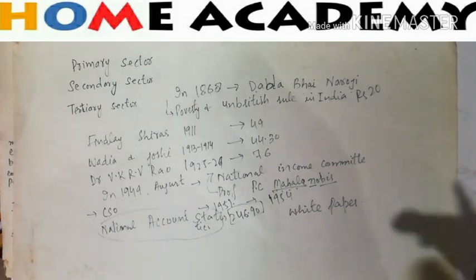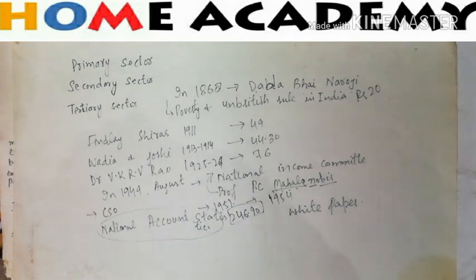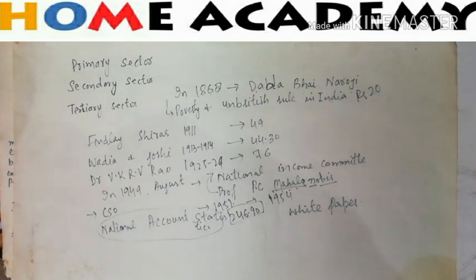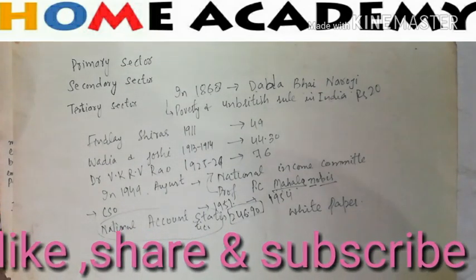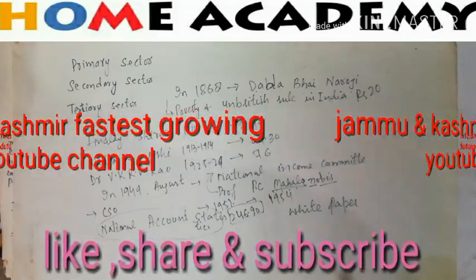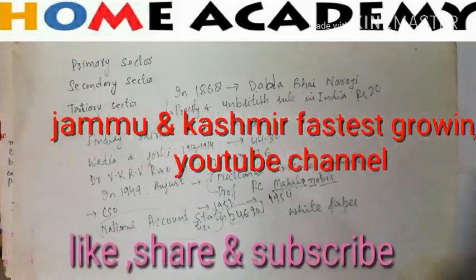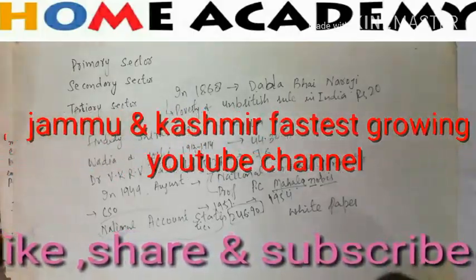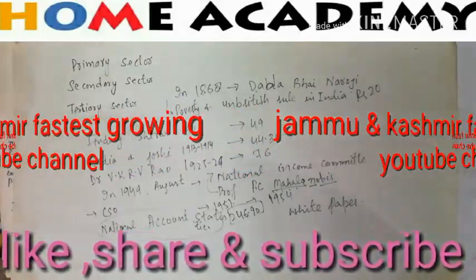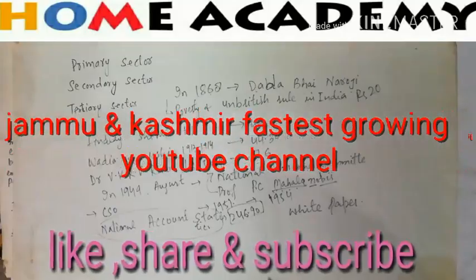So this National Account Statistics report is called the white paper. If you liked the video, please share it and don't forget to subscribe to the channel so you get notifications for every new video. Also regularly visit our blog at homeacademyblog.blogspot.com. Thanks!